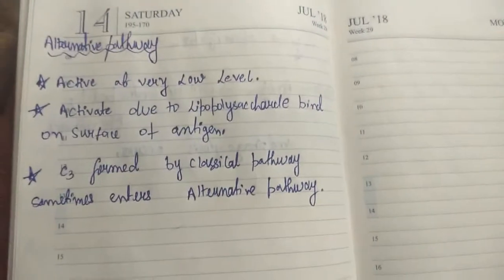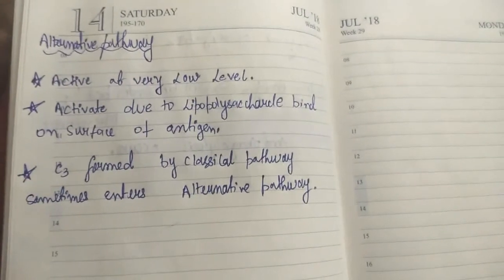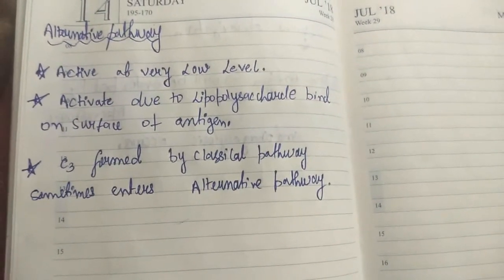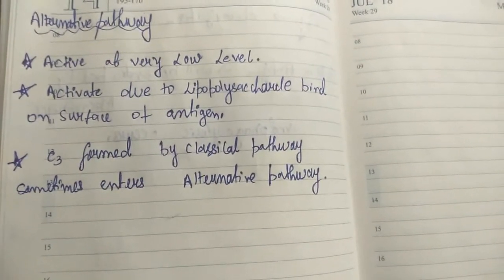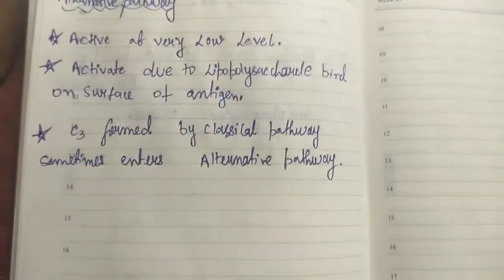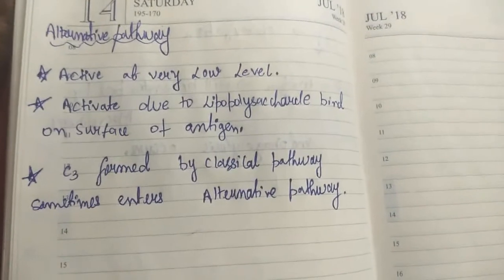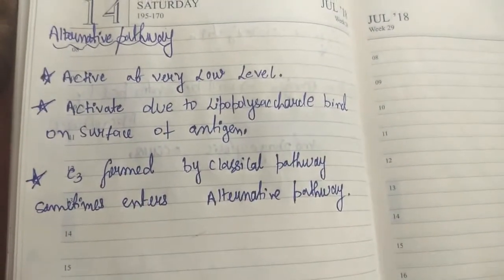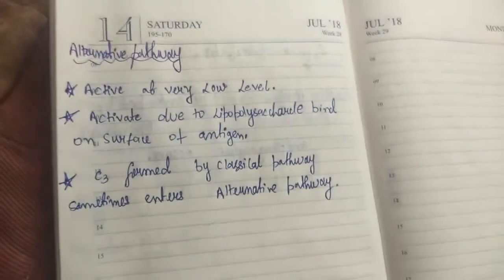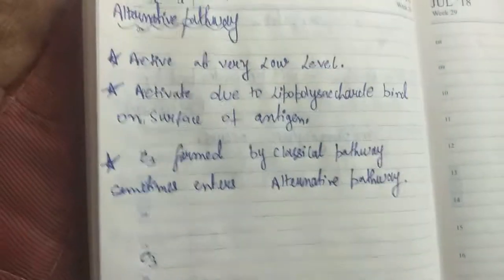Now I'll talk about the alternative pathway. Why the name 'alternative'? Classical is the normal pathway we know; alternative involves additional proteins playing an important role in complement activation. These are active at a very low level, not majorly activated. When the antigen surface is a lipopolysaccharide, this pathway is activated. This is a major difference: the alternative pathway is not dependent on antibody, unlike the classical pathway. Sometimes C3 produced by the classical pathway at very low levels can enter the alternative pathway — so it starts with C3.